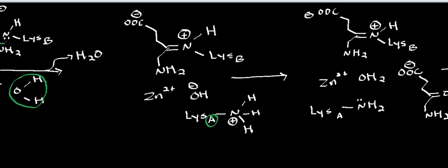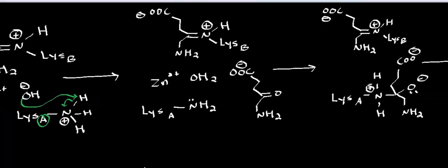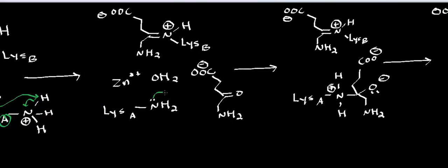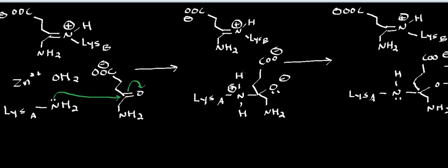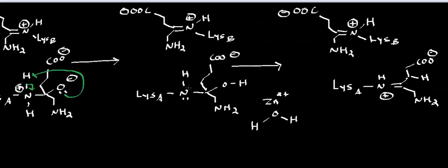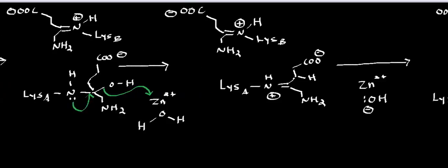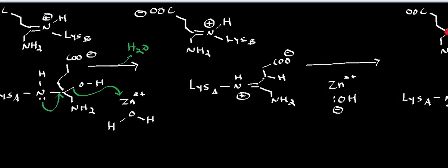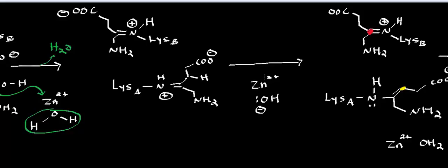The same mechanism happens again with lysine A. A hydroxide chelated to the zinc deprotonates lysine A, and that deprotonated lysine nucleophilically attacks the carbonyl of the second delta-aminolevulinic acid, generating a tetrahedral intermediate. The oxyanion then deprotonates the lysine, getting rid of the positive and negative charges. A second Schiff base forms — the lone pair kicks in — and the hydroxide leaves to attack the zinc, causing loss of water. Now a hydroxide is chelated to the zinc in the active site.